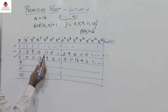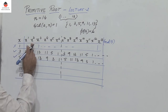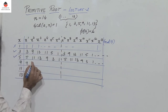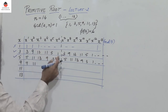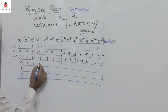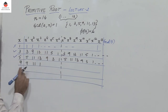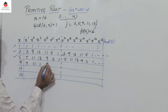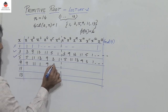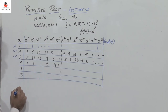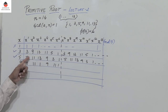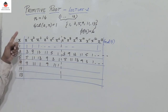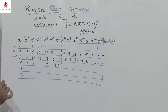Next, 9 power 1 mod 14 is 9. 9 squared mod 14 is 11. 9 cubed mod 14 is 11 times 9 mod 14, which gives us 1. So the sequence repeats 9, 11, 1 and so on. Now 9 is not generating all 6 numbers which are relatively prime to 14. So therefore 9 is not a primitive root of 14.